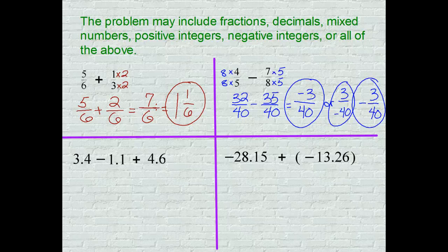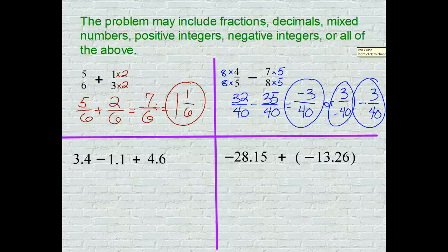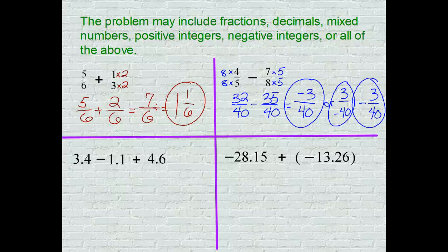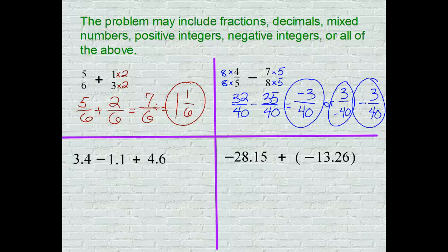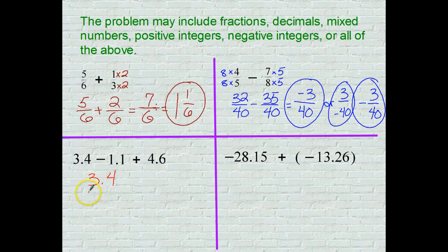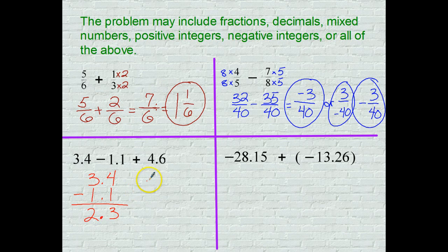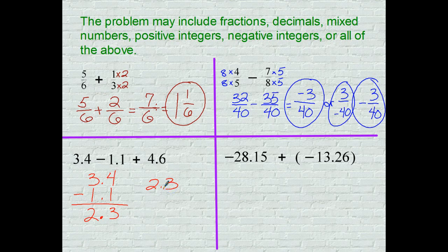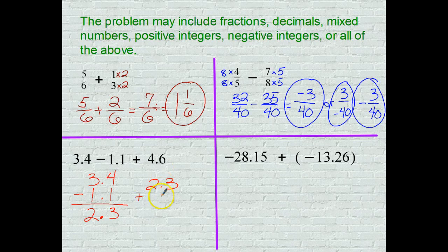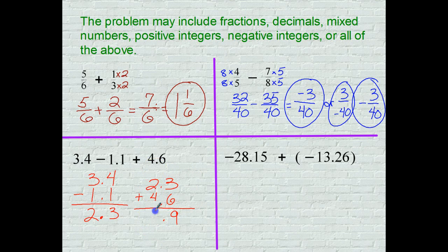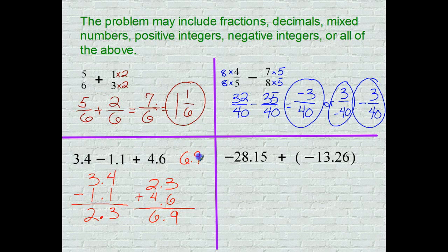Problem three, lower left-hand corner: 3.4 minus 1.1 plus 4.6. Okay, so we have an extended problem here, a multi-step problem where we have subtraction and addition. I don't see any negative signs per se, so I am just going to follow my basic rules of lining up my decimal. So 3.4 subtracted by 1.1, bring your decimal down. We have 2.3, and now what am I going to do to that? I'm going to add, line up my decimals, add them up. I have nine and I have six, so six and nine-tenths.